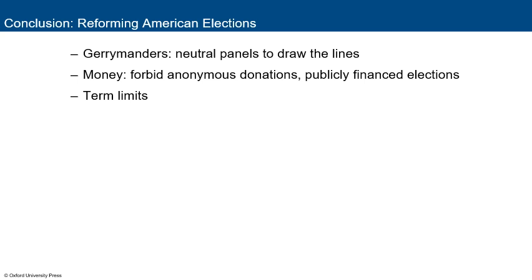How can we fix American elections? To fix gerrymandering, you need a neutral panel to draw the lines so the party in charge is not drawing them — good luck with that. On money: prohibiting anonymous donations and publicly financed elections funded by taxpayers instead of having candidates raise their own money — good luck with that. Term limits: limiting the number of times a candidate can run would stop incumbency advantages and open up elections.